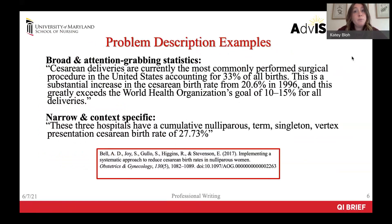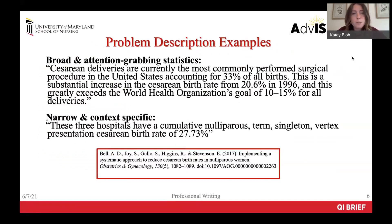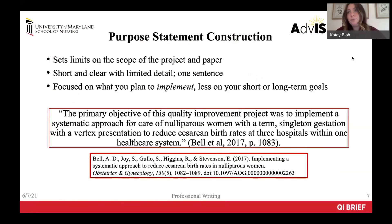These examples were pulled from the Bell article. For your broad and attention-grabbing statistic, you could say something like: cesarean deliveries are currently the most commonly performed surgical procedure in the United States. After that, you want to narrow your focus down to your specific context and give some data and background there. For example, these three hospitals have a cumulative cesarean birth rate of 27.3%.